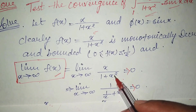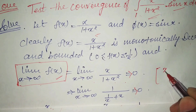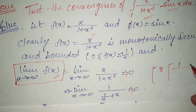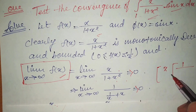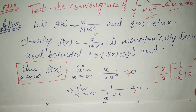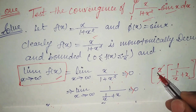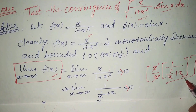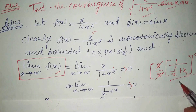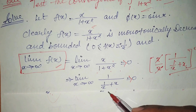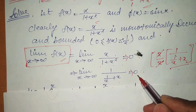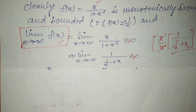Take x common from the numerator — the remaining term is 1. In the denominator, take x common — the remaining terms are 1/x plus x. The x cancels out, leaving 1/(1/x + x). Now put x = infinity: 1/x becomes 0, so you get 1/(0 + infinity) = 0. So the second condition is fulfilled.